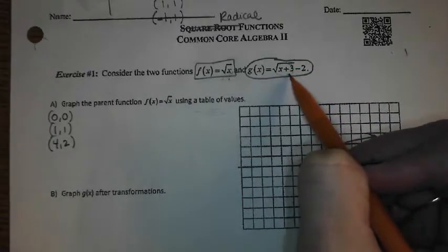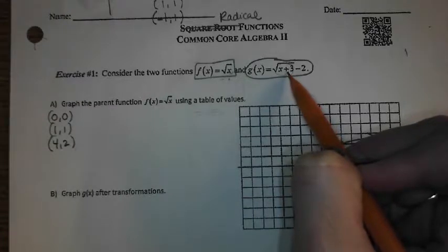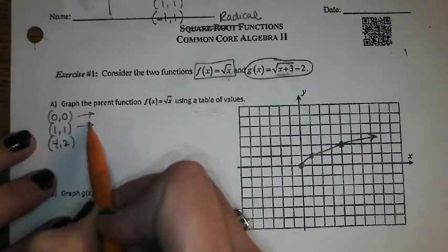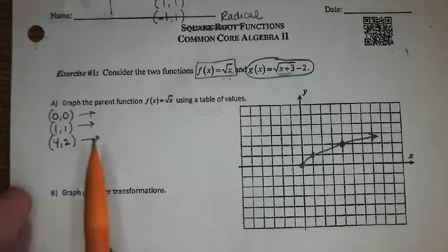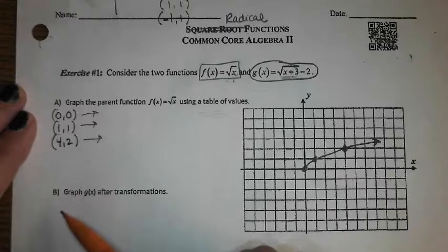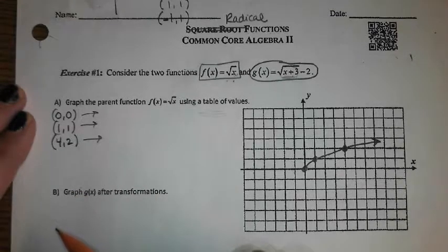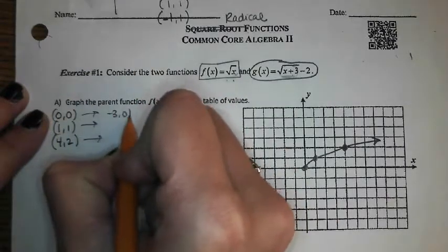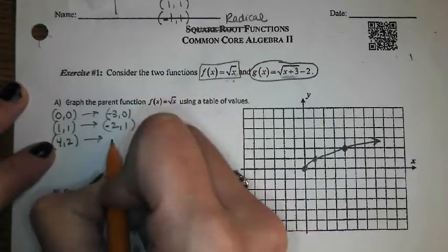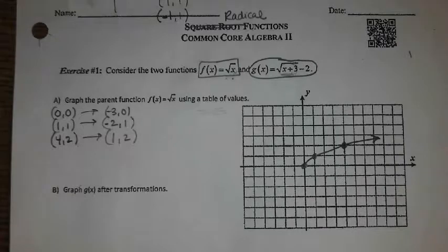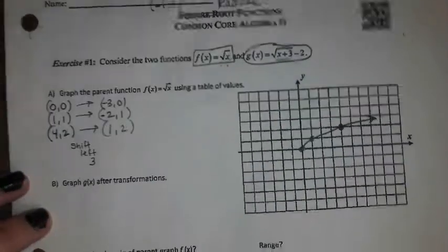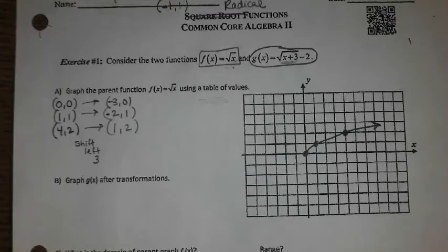You start within the function. All your horizontal stuff is going to happen first. This is plus, so that is a shift, and it's the opposite direction of what you'd think — so left 3. Since it's horizontal and affecting our x-coordinate, we need to take our critical points and think about where they'll be when we shift them left 3. Moving things horizontally affects the x-coordinate. So all the x-coordinates are going to go left 3: it'll be negative 3,0; negative 2,1; and 1,2.